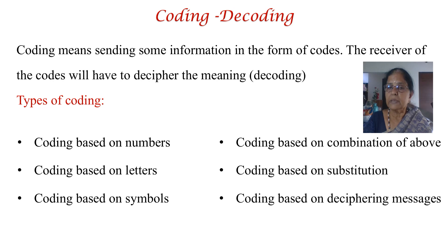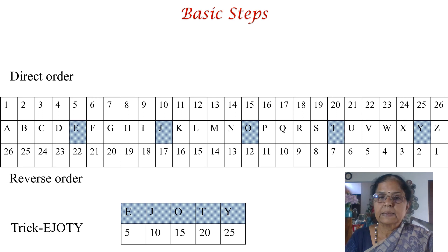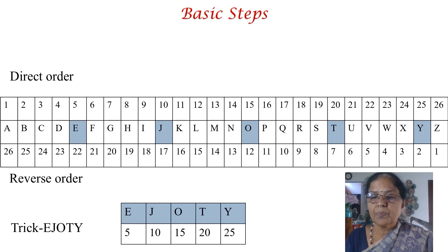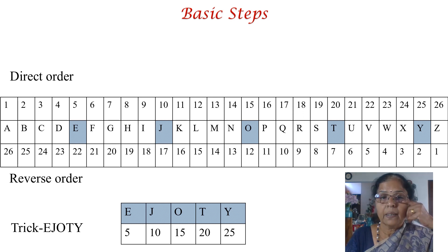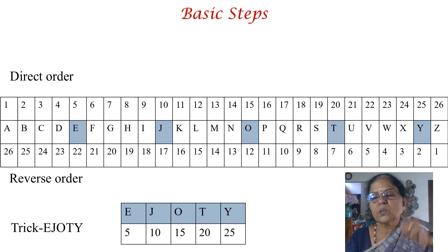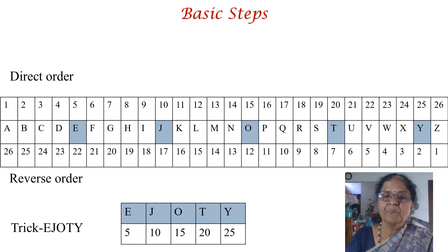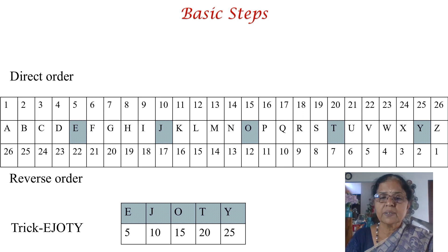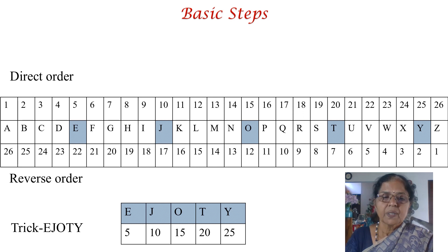In this video, we are going to see all the methods of coding and decoding one by one and hack the secret message. Before we get into problems, we will see some basic rules you should remember. For this type of coding and decoding question, the first thing you should do is draw a table where you list all 26 alphabets from A to Z in order.